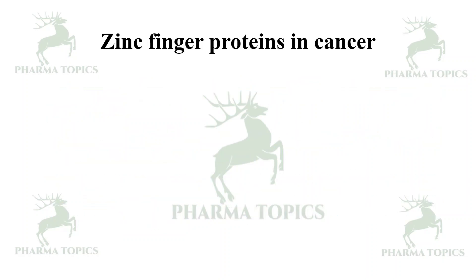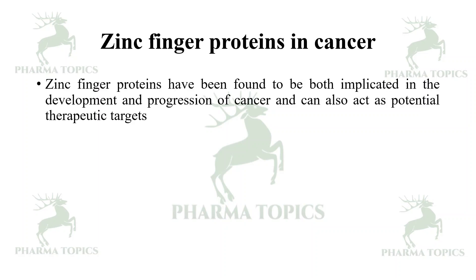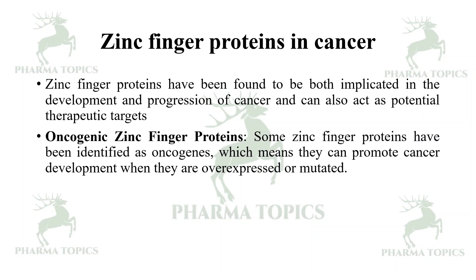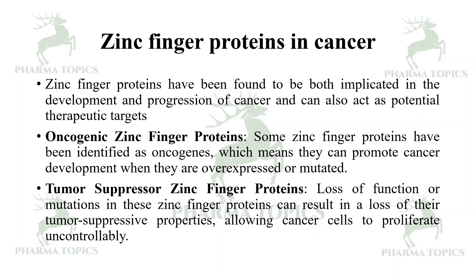One application is zinc finger proteins in cancer. Zinc finger proteins have been found to be both implicated in the development and progression of cancer and also act as potential therapeutic targets. Some zinc finger proteins have been identified as oncogenes, meaning they can promote cancer development when overexpressed or mutated. Some zinc finger proteins also have tumor suppressor function, and loss of function or mutations in these tumor suppressor zinc finger proteins can result in loss of tumor suppressive properties.